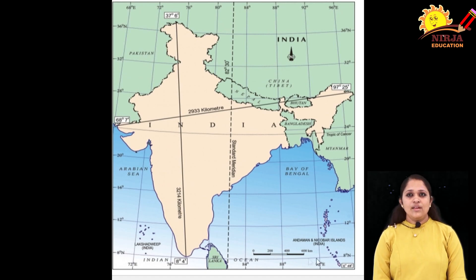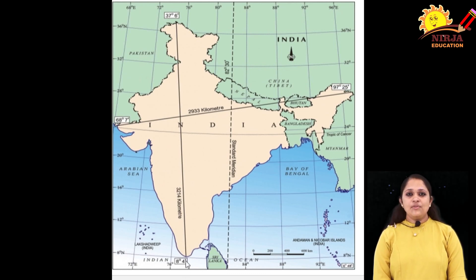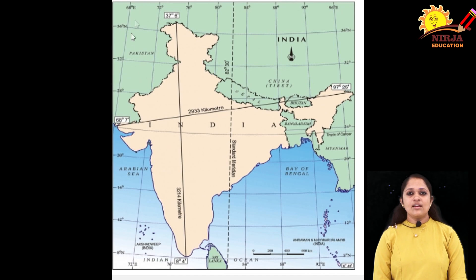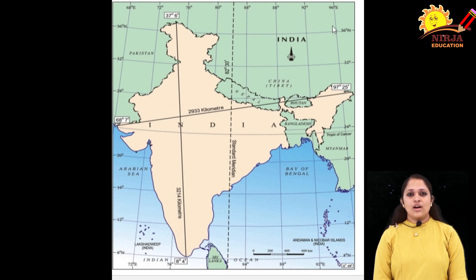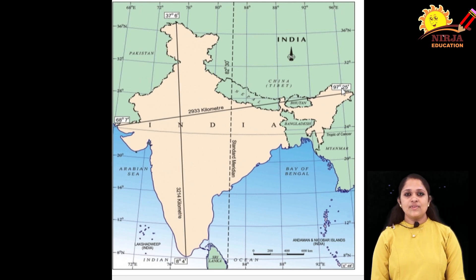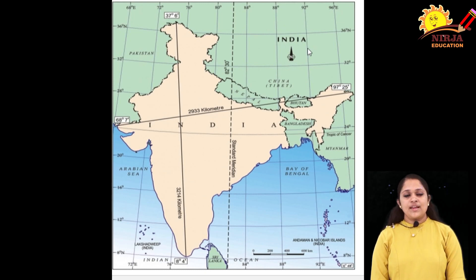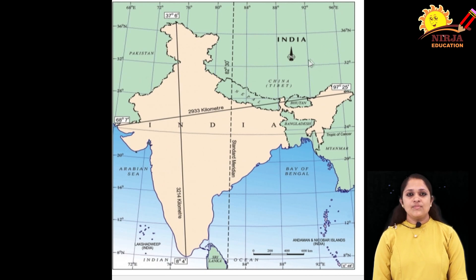The mainland stretches from latitude 8 degrees 4 minutes north to 37 degrees 6 minutes north, and from longitude 68 degrees 7 minutes east to 97 degrees 25 minutes east. The latitude and longitude extent of the country is almost the same in degrees, that is about 30 degrees — meaning the distance between latitude extent and longitude extent is approximately 30 degrees each.